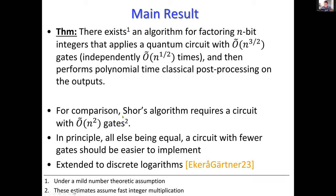This was also extended to discrete logarithms — see a recent preprint from Karen Gartner. One footnote: these estimates assume you're using fast integer multiplication. In practice you might not want to use those fast algorithms because they incur a large constant overhead for small numbers, but the similar speedup is present regardless of which multiplication algorithm you use.